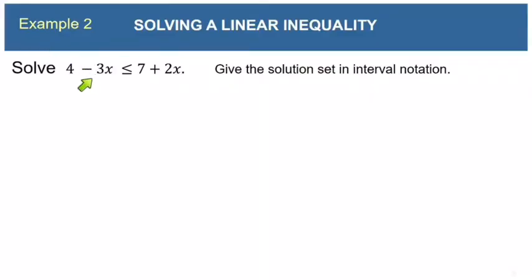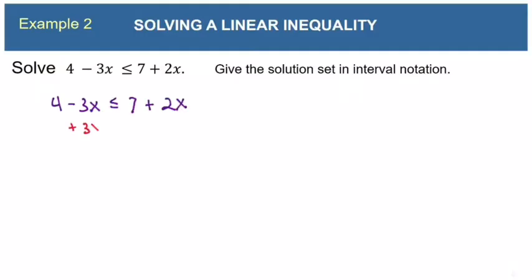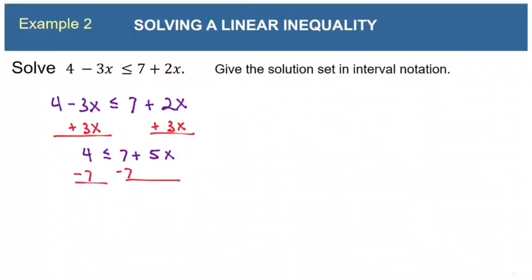Here is example two — the first one with variables on both sides. I prefer to treat these the same way we treated equations: look for the smallest x term and eliminate it first. Let's add 3x to both sides, giving us 4 is less than or equal to 7 plus 5x. Now subtract 7 from both sides: negative 3 is less than or equal to 5x.